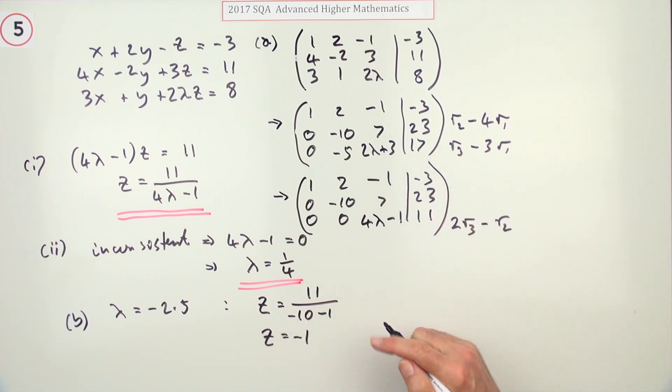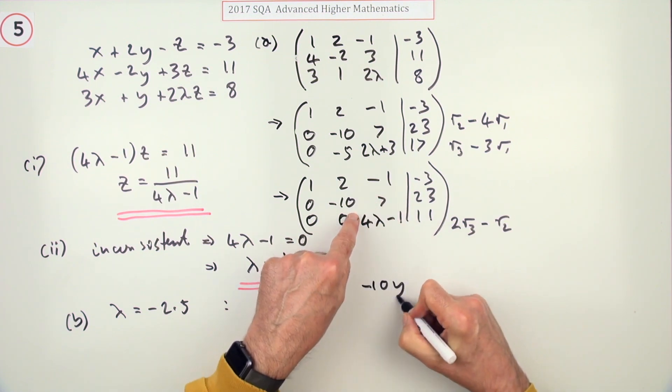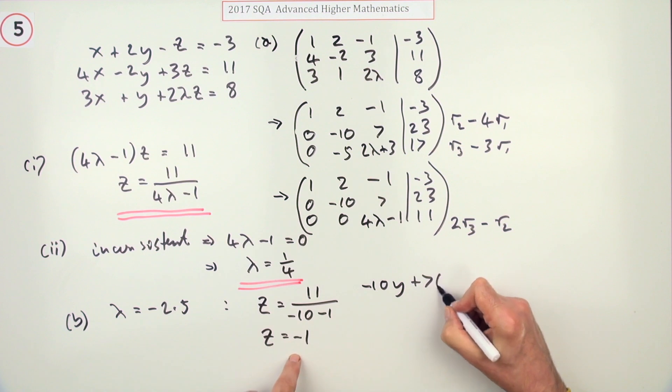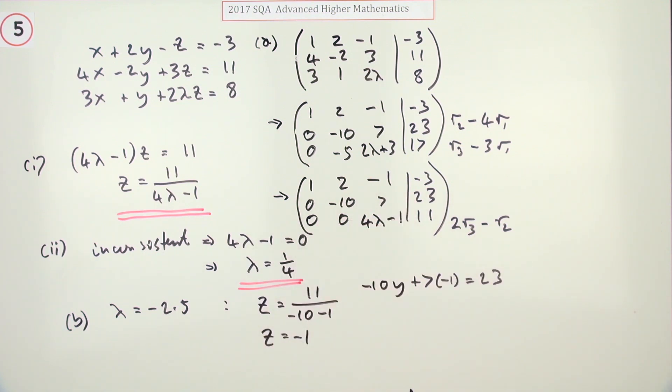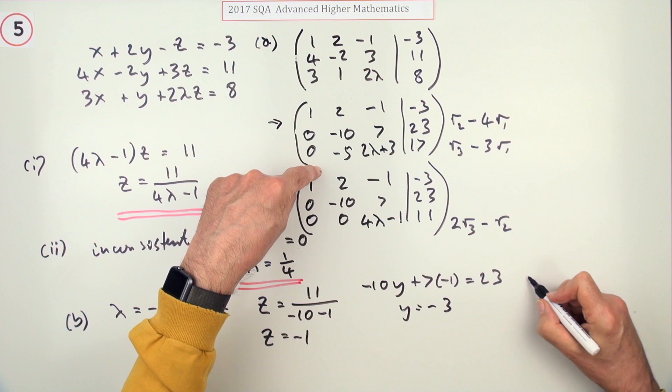Then I'm just going to step back up. So the second line said this: negative 10y plus 7z, so plus 7 negative 1s, made that 23. That's where that 23 turns in quite handy because when that negative 7 goes across it makes it a 30. And the 30 divided by the negative 10 is negative 3.